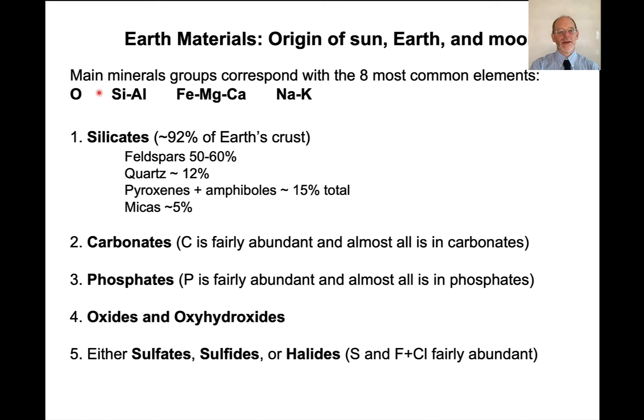And so it's perhaps not surprising that these elements, iron and all these other ones here, are the ones that define the most common mineral groups. So for example, if we look at silicates, silicates are about 92% of Earth's crust. They are made up dominantly of silicon, aluminum and oxygen. That's quartz. Feldspar has sodium and calcium. Pyroxenes and amphiboles have iron and magnesium and calcium.